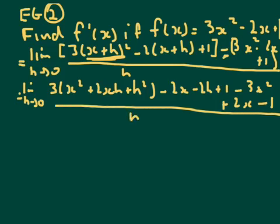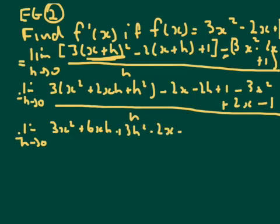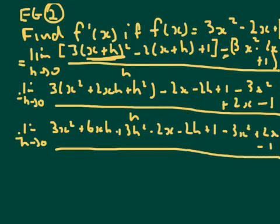Okay, now what have we got? Well, we've got equals a limit as h goes to 0. 3x squared plus 6xh plus 3h squared minus 2x minus 2h plus 1, minus 3x squared plus 2x minus 1, all over h.